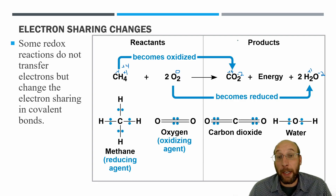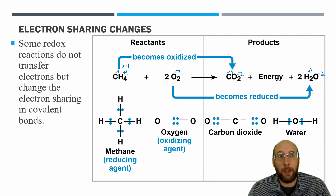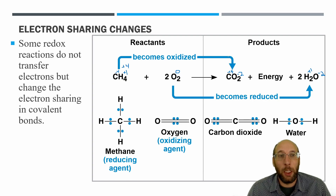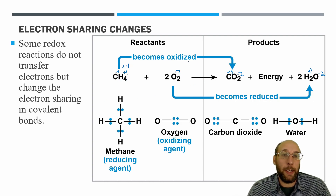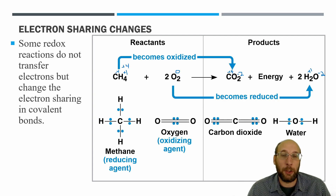The more electronegative an atom, the more energy is required to take away an electron from it. An electron loses potential energy when it shifts from a less electronegative atom toward a more electronegative atom. That's why methane combusting with oxygen releases a lot of energy — the electrons move from less electronegative carbon to more electronegative oxygen.